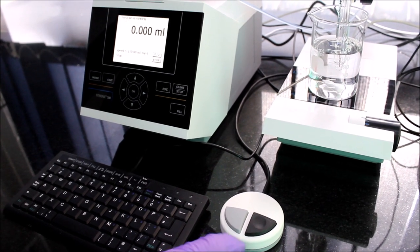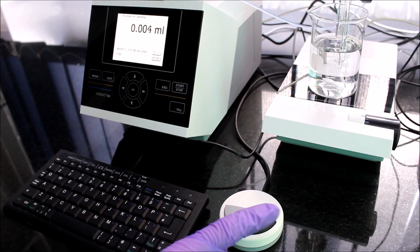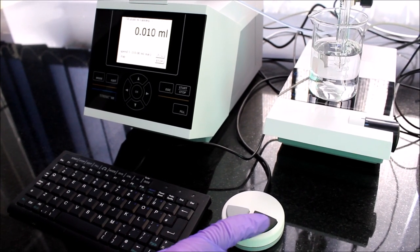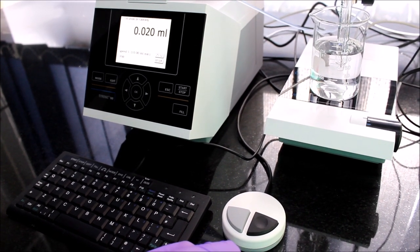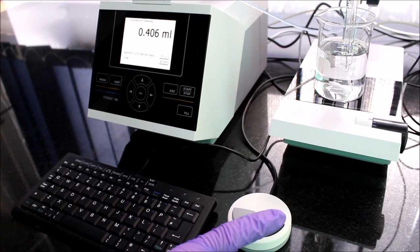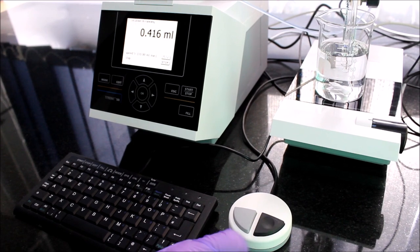So now when I lightly press the right button once, the machine always delivers 0.01 milliliters of titrant solution. If I click firmly, the delivering process becomes continuous. The button has two resistance points at which the speed of delivery increases.